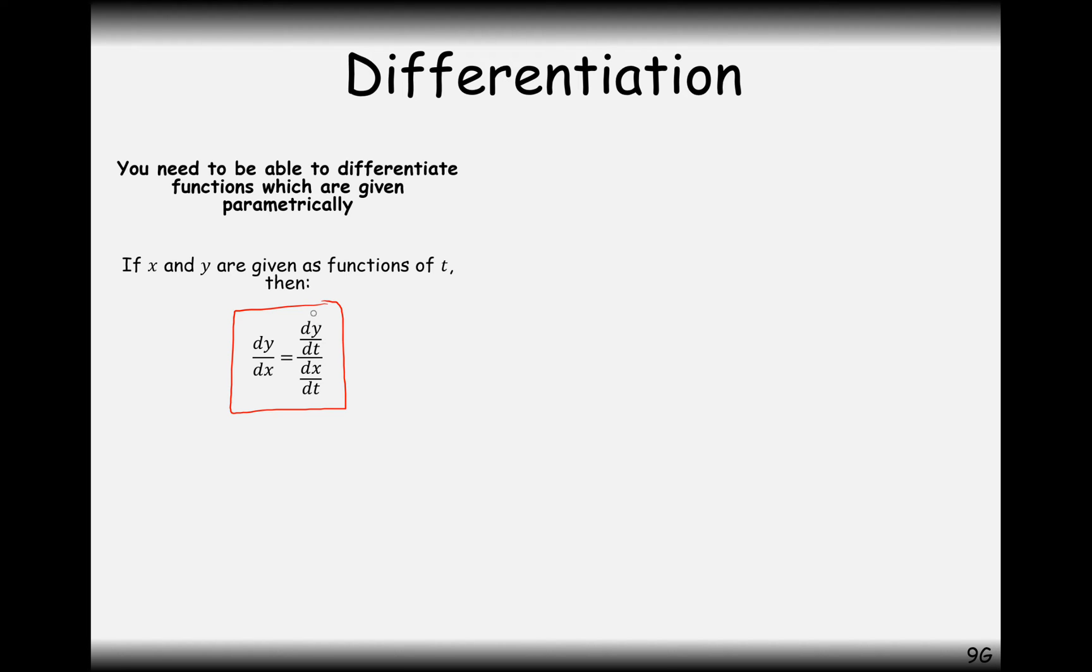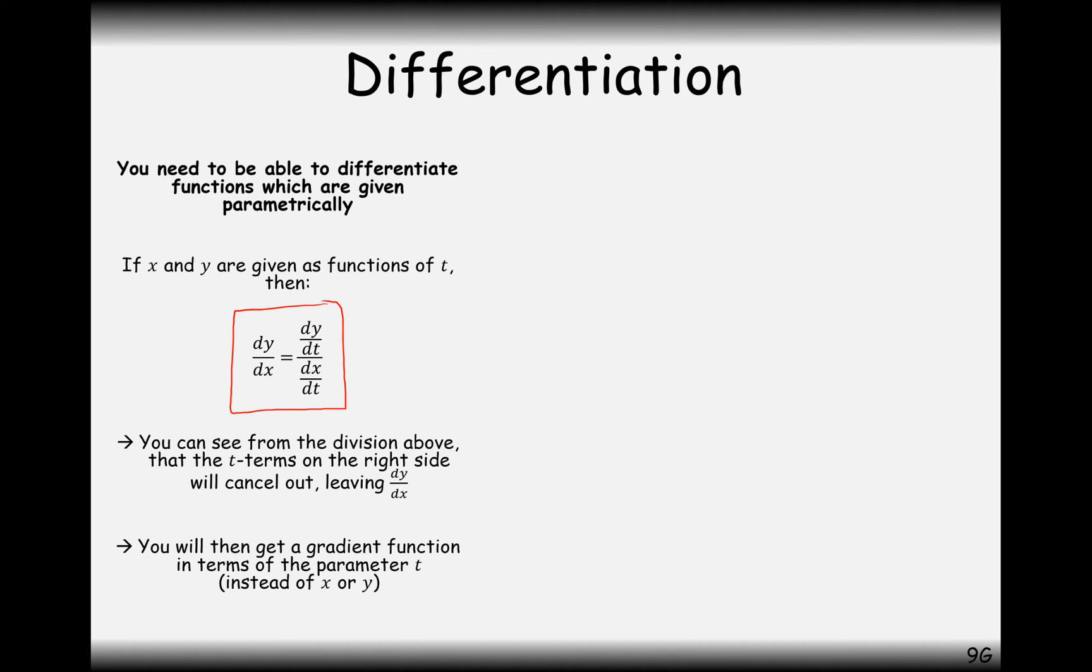is equal to dy by dt divided by dx by dt. And if you consider these as fractions, then in fact if you simplify these fractions here, you're going to simplify them to dy by dx. You can see this from the division above, that the t terms on the right hand side will cancel out, leaving dy by dx. You will then get the gradient function in terms of your parameter t instead of x or y.